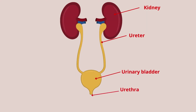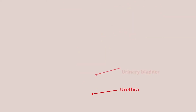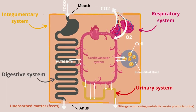The urinary system is composed of the kidneys, ureters, urinary bladder, and urethra. It has several functions: it maintains acid-base balance, regulates water and electrolytes, red blood cell formation, and the volume and chemical composition of the blood. What we care about here is that the urinary system eliminates nitrogenous wastes after absorbing them from the blood.